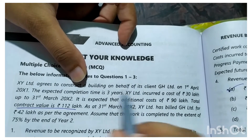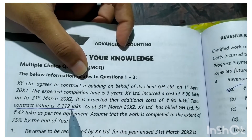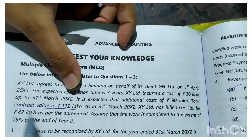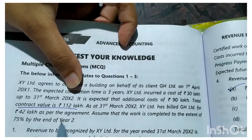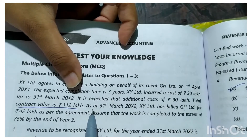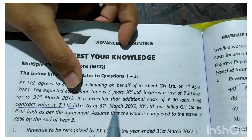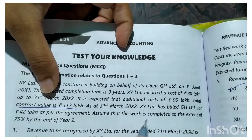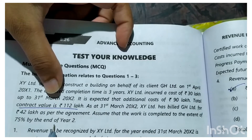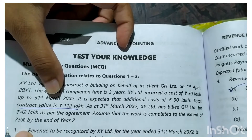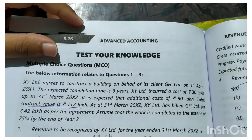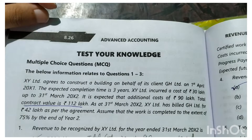The total contract value is 112 lakh. Even though the amount required to complete the project is 120 lakh, the total contract value is just 112 lakh — so there is a loss of 112 minus 120, which is 8 lakh. As at 31st March 20X2, XY Limited has billed GH Limited 42 lakh as per the agreement. Assume that 75 percent of the work is completed by end of year two. Question one asks: what is the revenue to be recognized by XY Limited for the year ended 31st March 20X2?